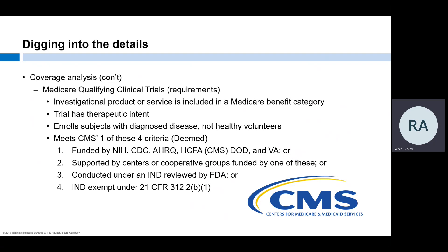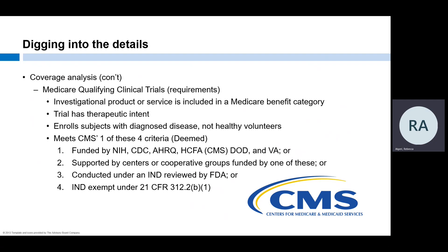Identifying which elements of patient care required by the protocol are standard of care versus for research purposes only is half the battle. The other half is determining if the study is a qualifying clinical trial. A qualifying clinical trial has these elements: the investigational product or service is included in a Medicare benefit category; the trial must have therapeutic intent with objectives including treating the disease under study; and the trial must enroll subjects with that diagnosed condition—studies of healthy volunteers would not be deemed. The study must also be funded by a federal agency such as NIH, CDC, or VA; sponsored by a cooperative group with federal funding; or conducted under an IND or be IND exempt.